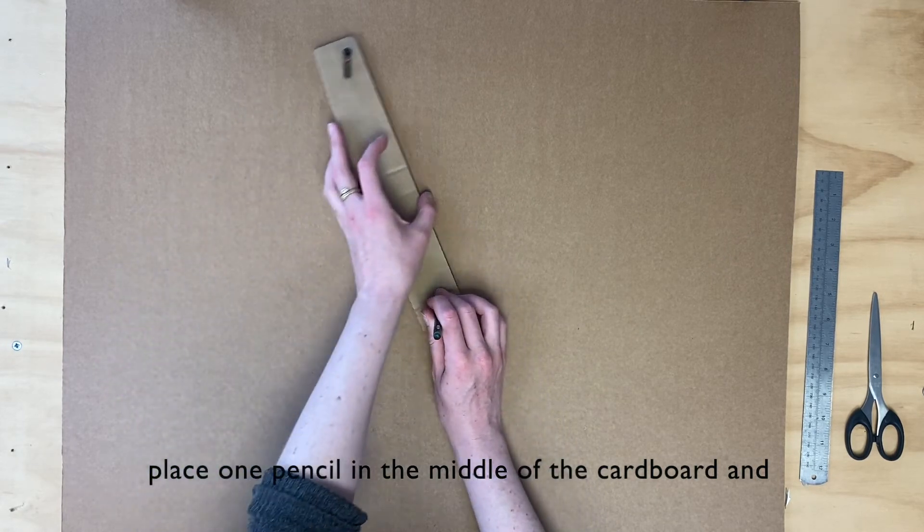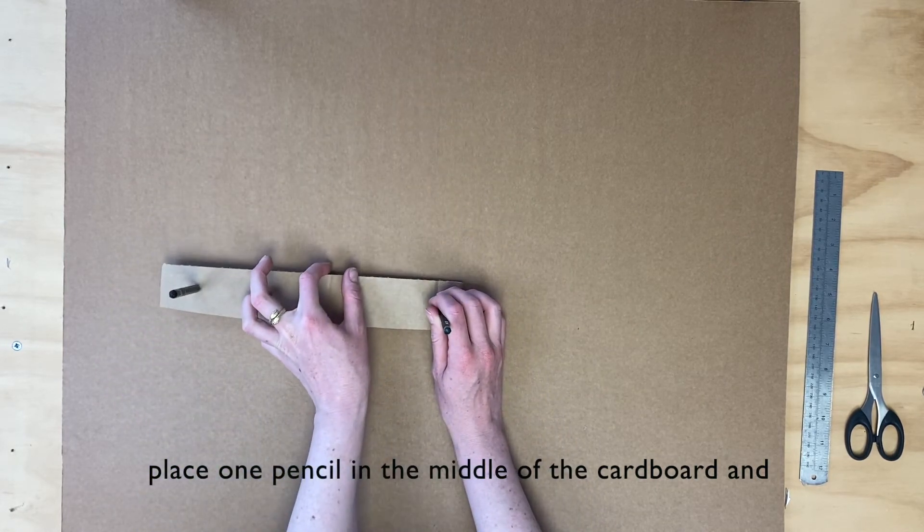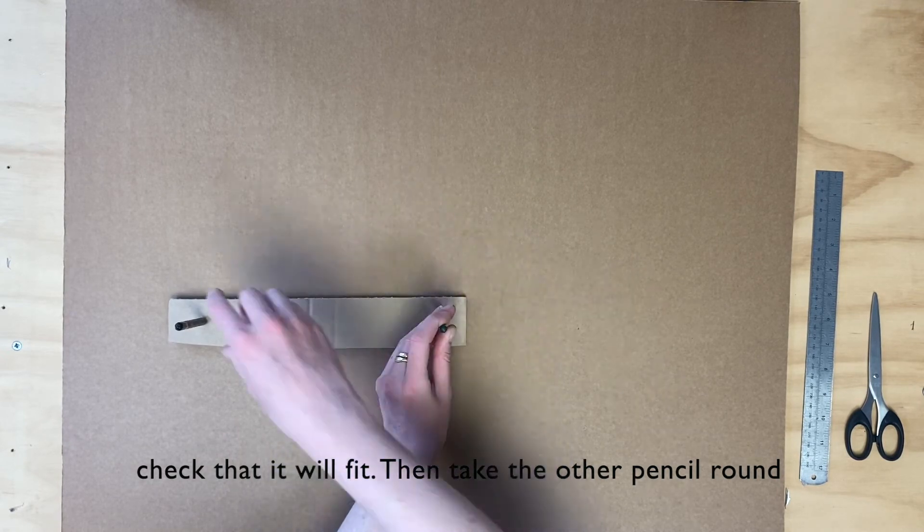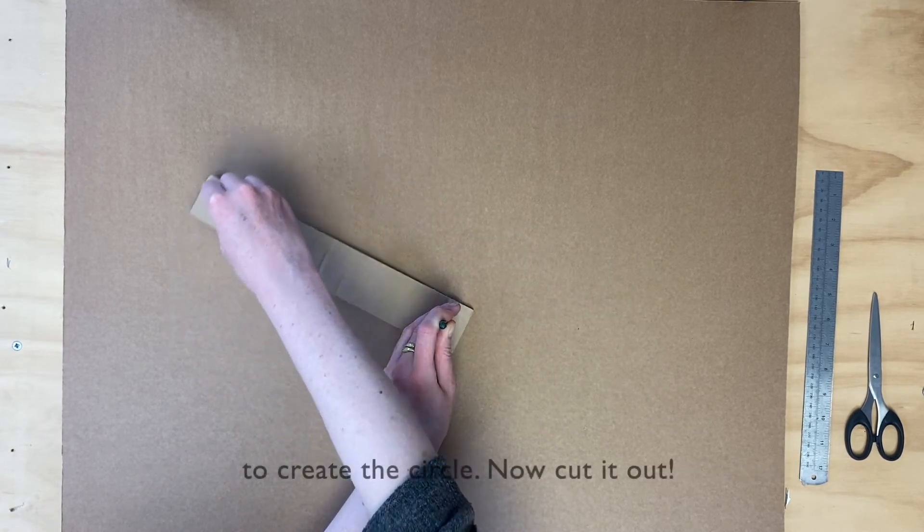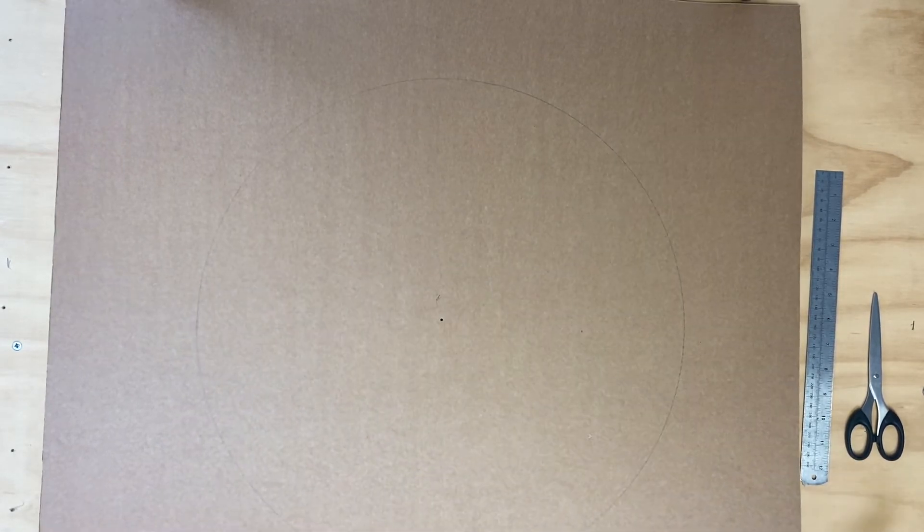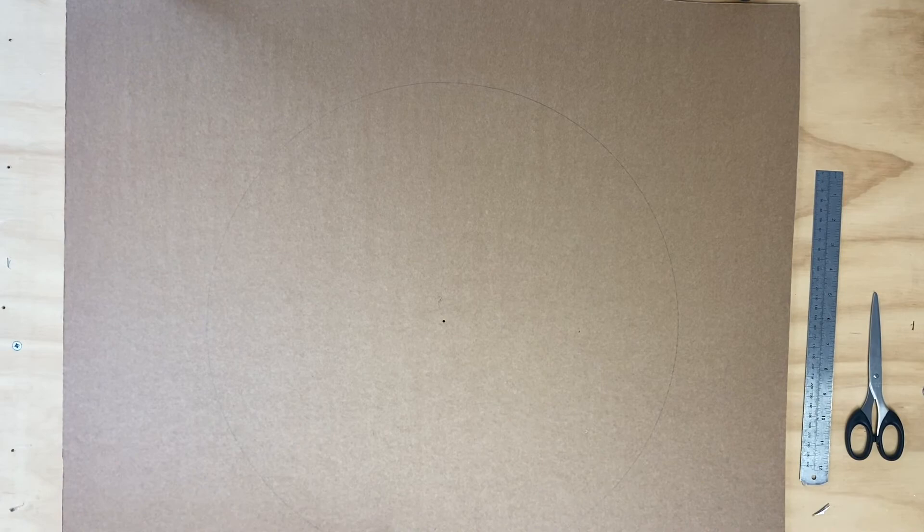Place one in the middle of your cardboard and just check that this reaches and doesn't go off the sides. Pop that in the middle and go around like that. And you've got your perfect circle, and then we just need to cut that out.